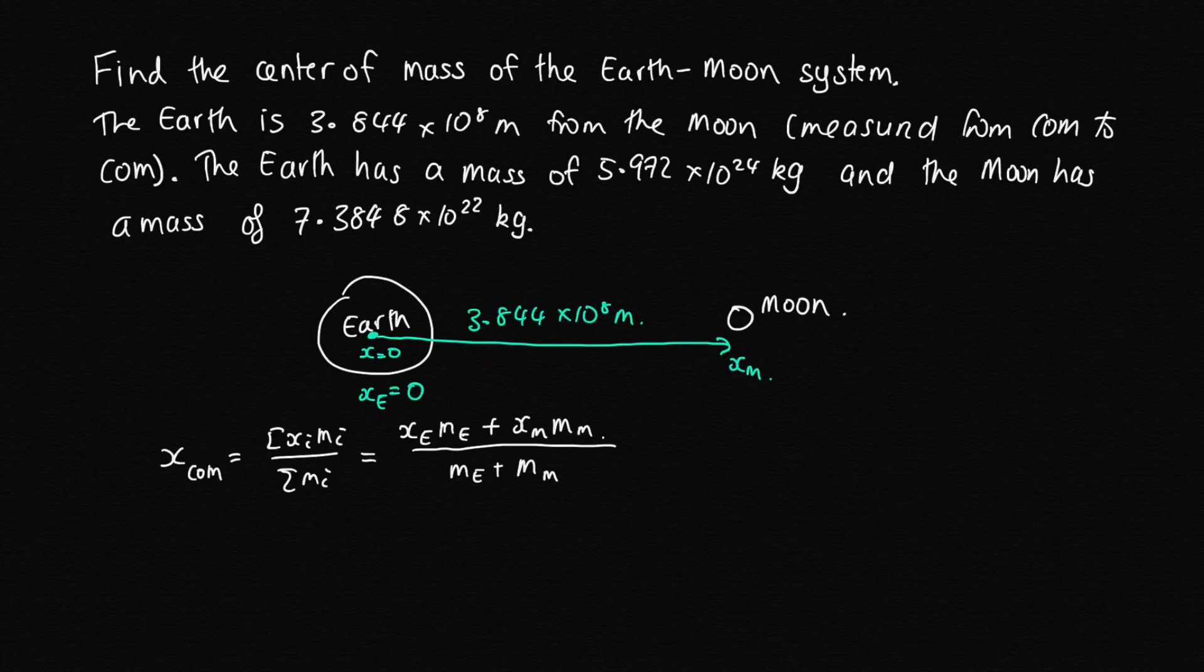We've just said that x of the Earth equals zero. So this one here is zero, and this distance here is x of the Moon, because that's the distance of the center of mass of the Moon from the center of the Earth, which is our origin.